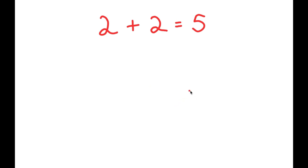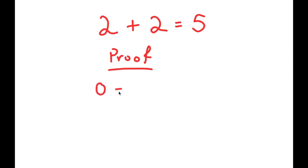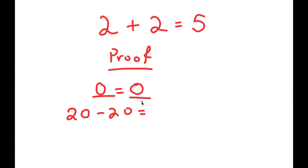In this video, I'm going to prove that 2 plus 2 is equal to 5. I'll start with the true statement that 0 equals 0. I'll rewrite the left-hand side as 20 minus 20 and the right-hand side as 25 minus 25. So 20 minus 20 equals 25 minus 25, which is still true since both sides equal 0.